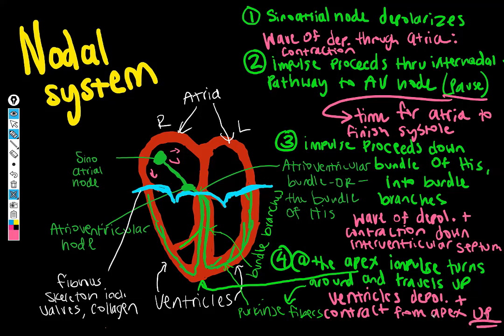And that from apex up aspect is really important because that's how you efficiently squeeze blood up and out of the heart. Like squeezing toothpaste out of a tube. And the reason that we efficiently squeeze blood up and out is because of the nodal pathway and its order. And the way that it proceeds down and then turns around. And also because, of course, the electrical isolation provided by the fibrous skeleton prevents any of that from occurring until the atria are finished depolarizing and contracting.